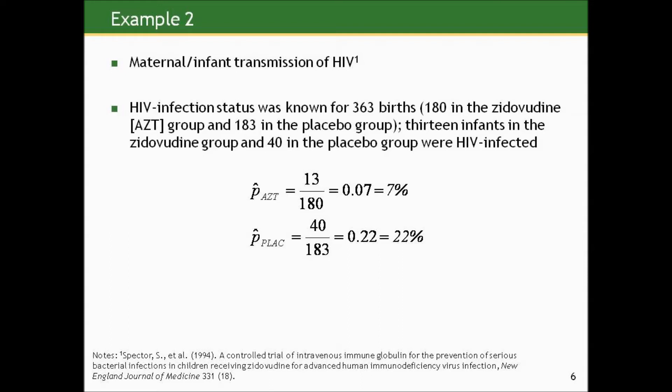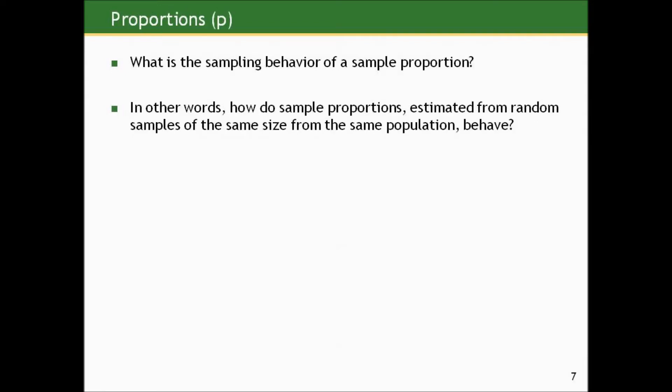But of course these are just estimates in all the examples we've looked at, based on imperfect, hopefully representative subsets from larger populations. So we want to know something about the sampling behavior of a sample proportion — how do sample proportions estimated from random samples of the same size from the same population behave from sample to sample? Let's do a simulation to look at this.